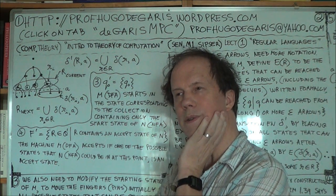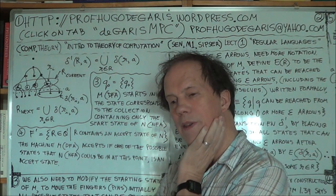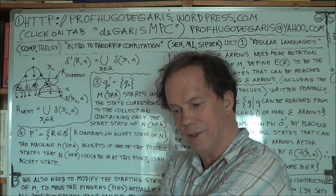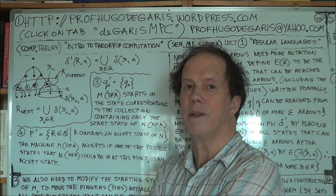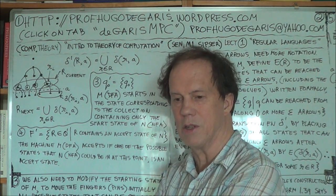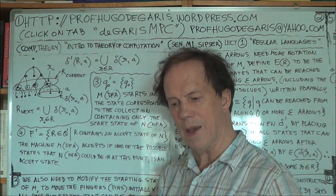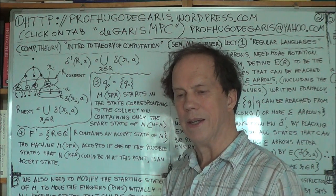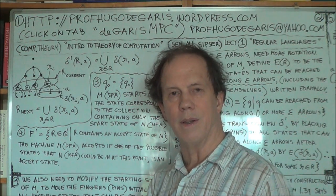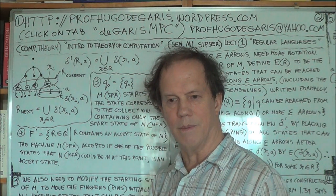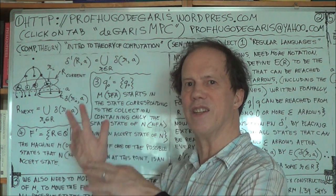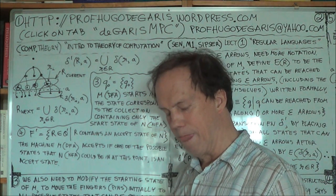The number of states that the NFA has is N, then the number of states that the equivalent DFA will have will be 2 to the power N — so hugely more. This illustrates the point that, in general, the equivalent DFA is usually a lot more complex than its equivalent NFA, simply because you have this exponentially larger number of states.